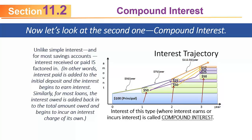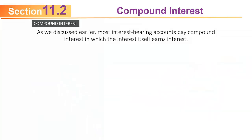That graph gives you what's called the interest trajectory. Most interest-bearing accounts pay compound interest rather than simple interest. In terms of common consumer transactions, you will almost always be dealing with compound interest, where the interest itself earns interest or charges you interest if you're talking about a loan.